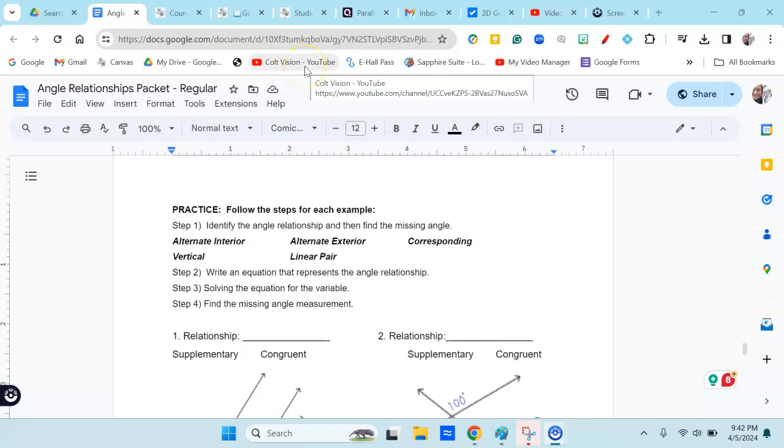Hi, so to do this practice, you're going to each time identify the relationship, that's step one. You're going to write alternate interior, alternate exterior, corresponding, vertical, or linear pair for the angles in the picture.